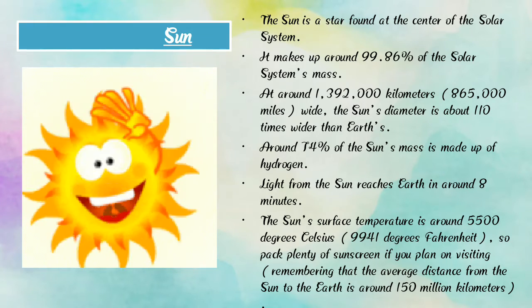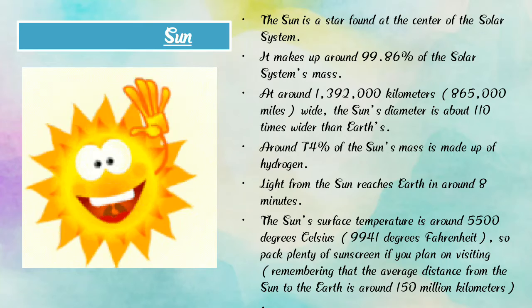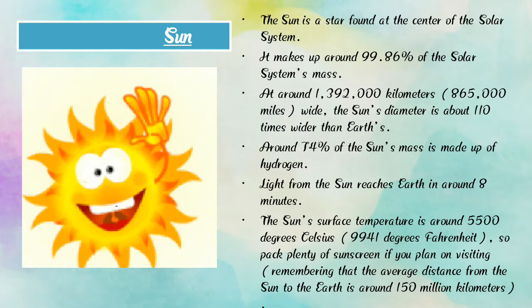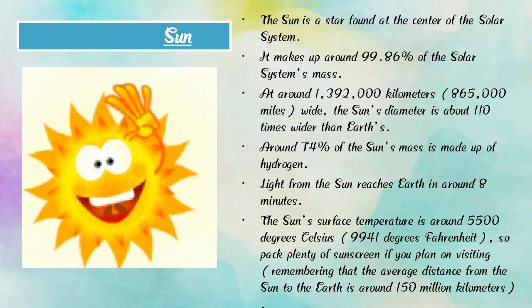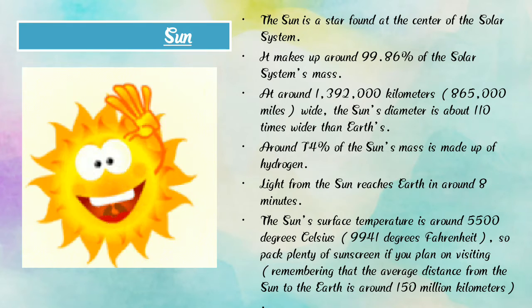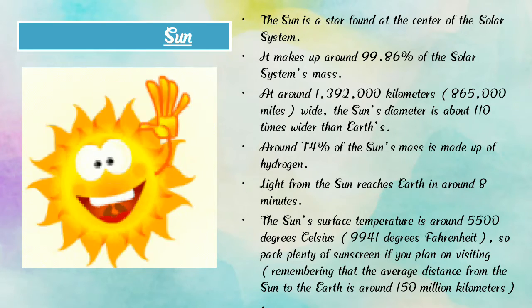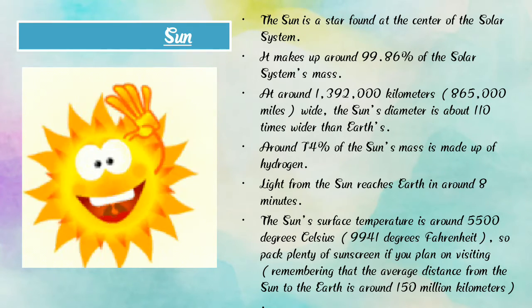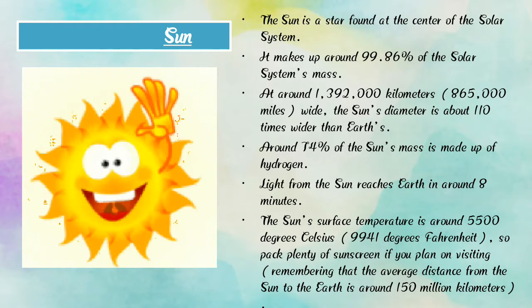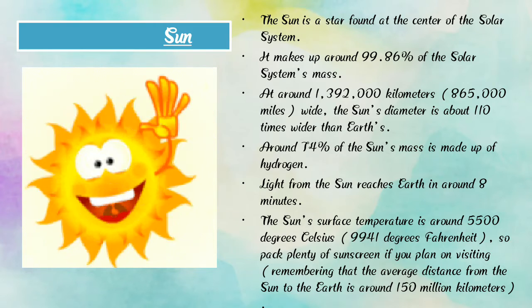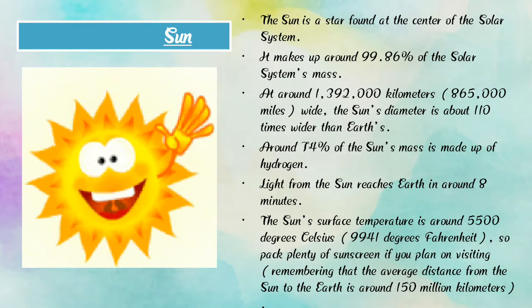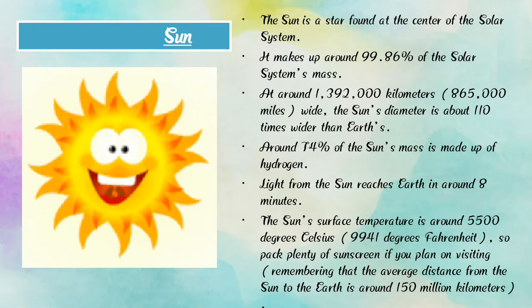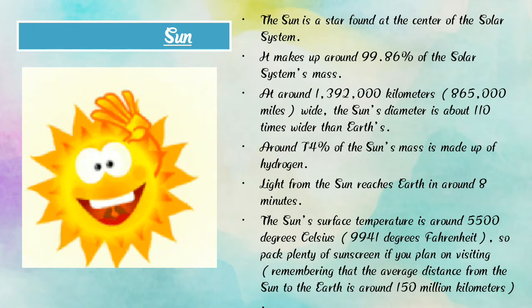The sun is a star found at the center of the solar system and shines during the day. It makes up around 99.86% of the solar system's mass and is around 139,000 kilometers wide. The sun's diameter is about 110 times wider than Earth, and around 74% of its mass is made up of hydrogen. Light from the sun reaches Earth in around 8 minutes.